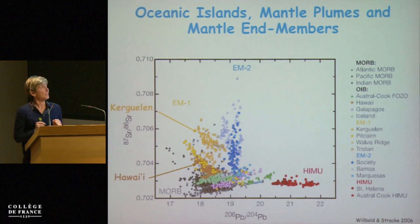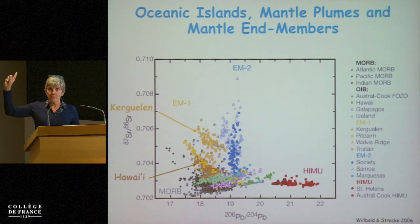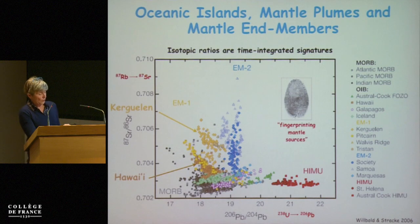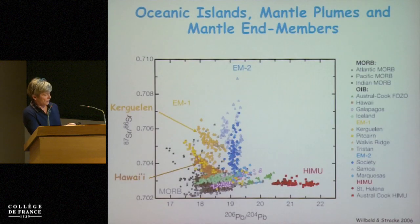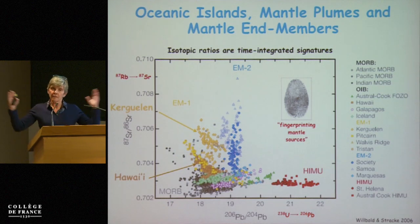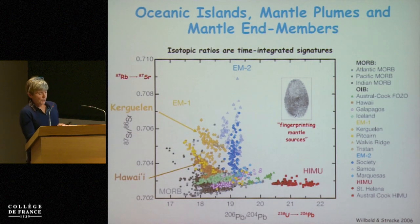My goal is that at the end, we should have an understanding of what we're talking about. We will talk about isotopes. The one thing you need to remember is my finger — it's a fingerprint of the source. That's the one thing. And the second thing: it's a time-integrated signature. For instance, in this diagram where we have strontium versus lead-206, we have the time-integrated signature of rubidium-87 decaying into strontium-87 and uranium-238 into lead-206. Time-integrated means millions, if not billions of years — the fingerprint of the mantle source.